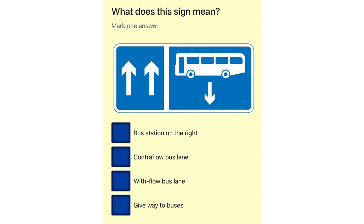What does this sign mean? Bus station on the right. Contraflow bus lane. With flow bus lane. Give way to buses.